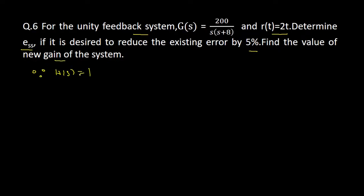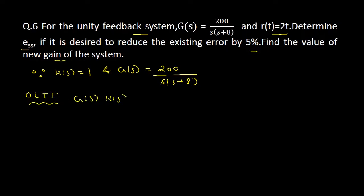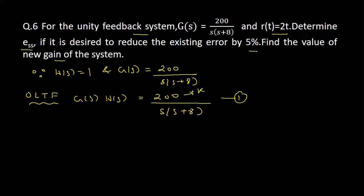H(s) will be equal to 1 since it is a unity feedback system. G(s) is given as 200 divided by s(s+8). So the open loop transfer function G(s)H(s) will be equal to 200 divided by s(s+8) — let this be equation number 1. The gain K is equal to 200, and we have to find the new value of K.